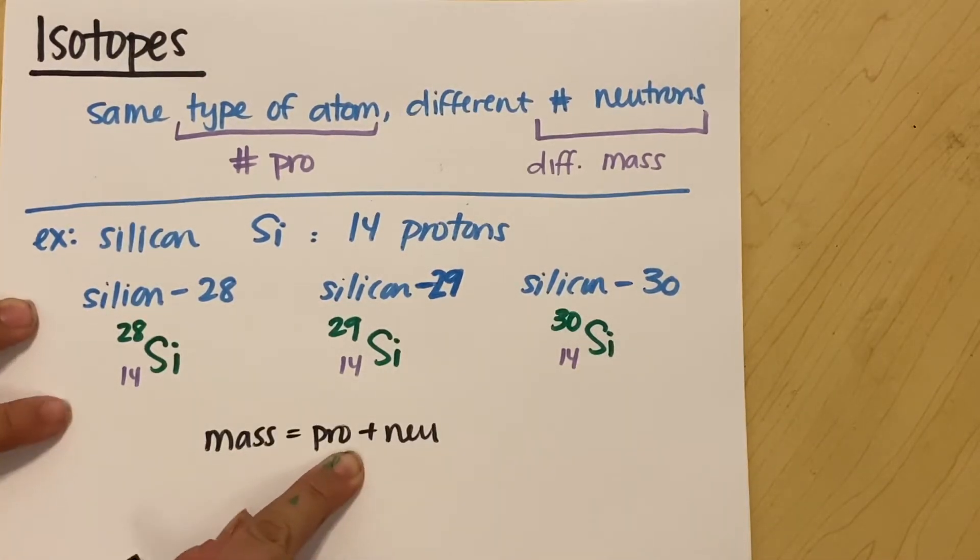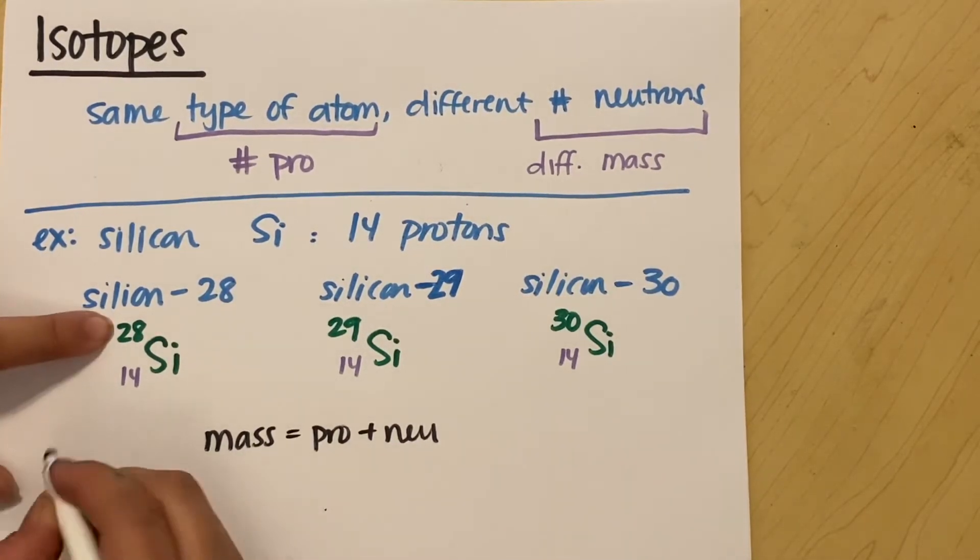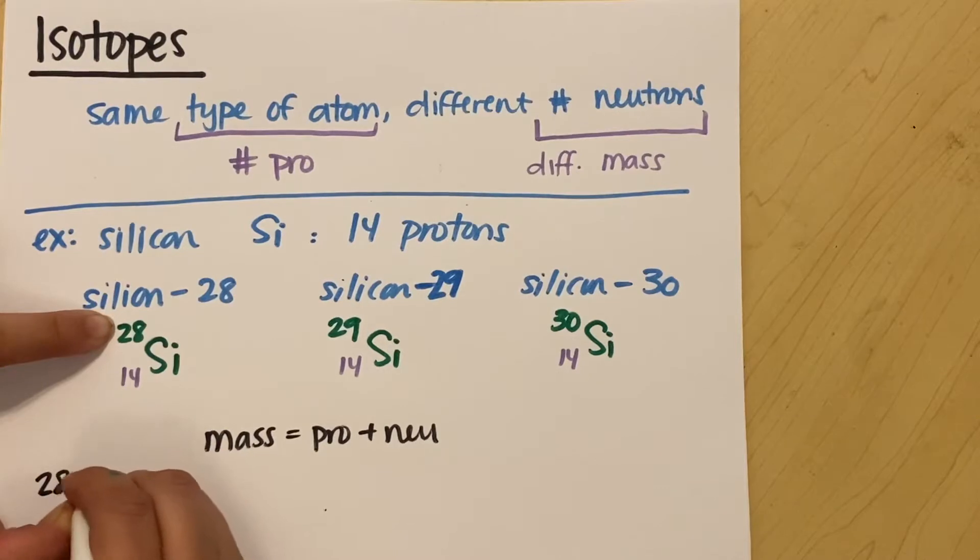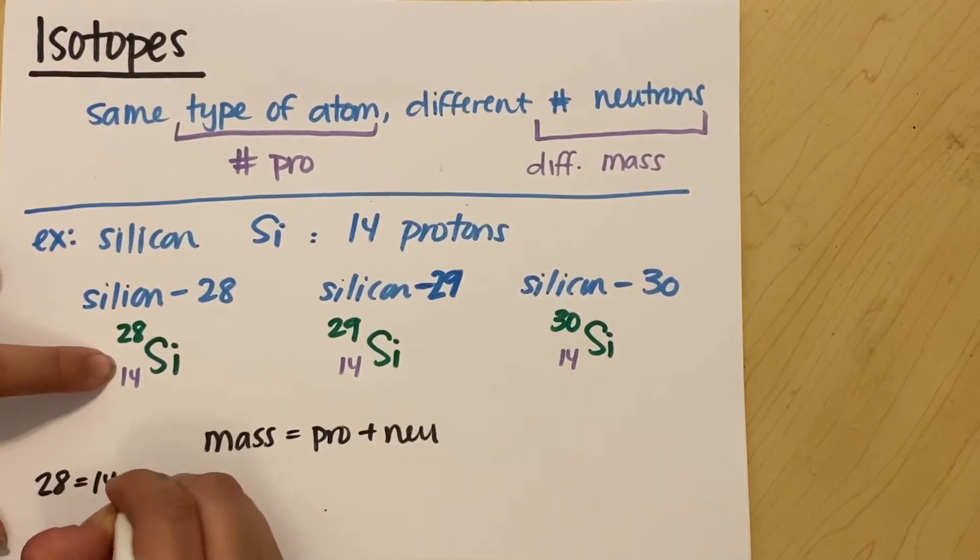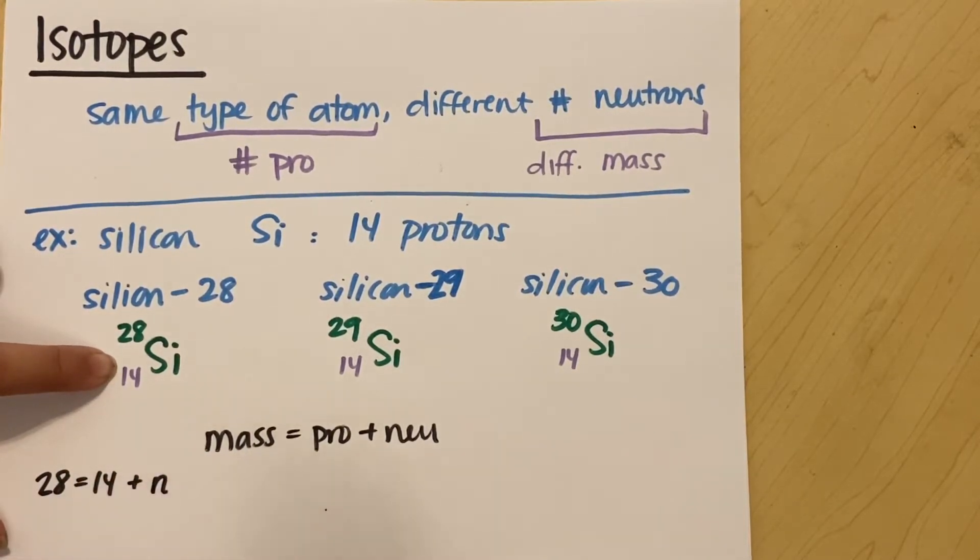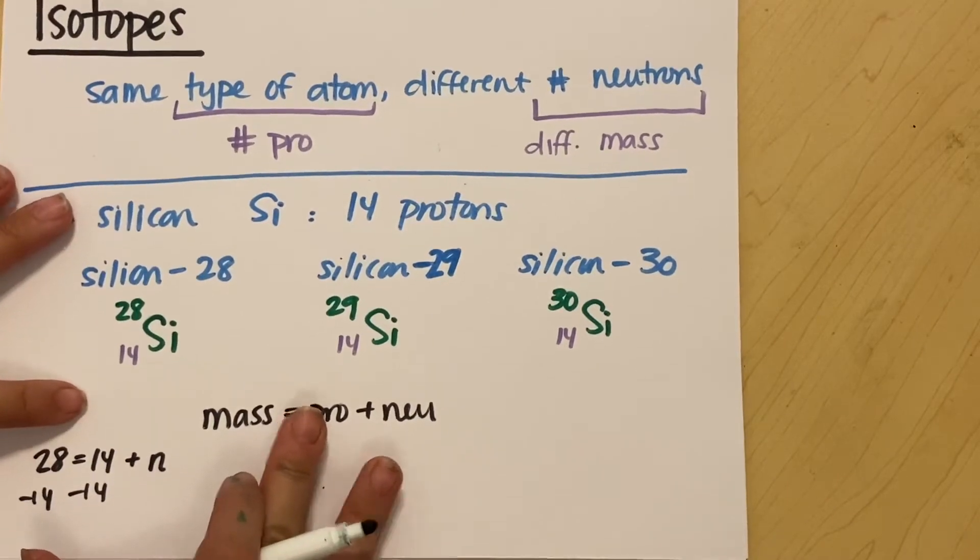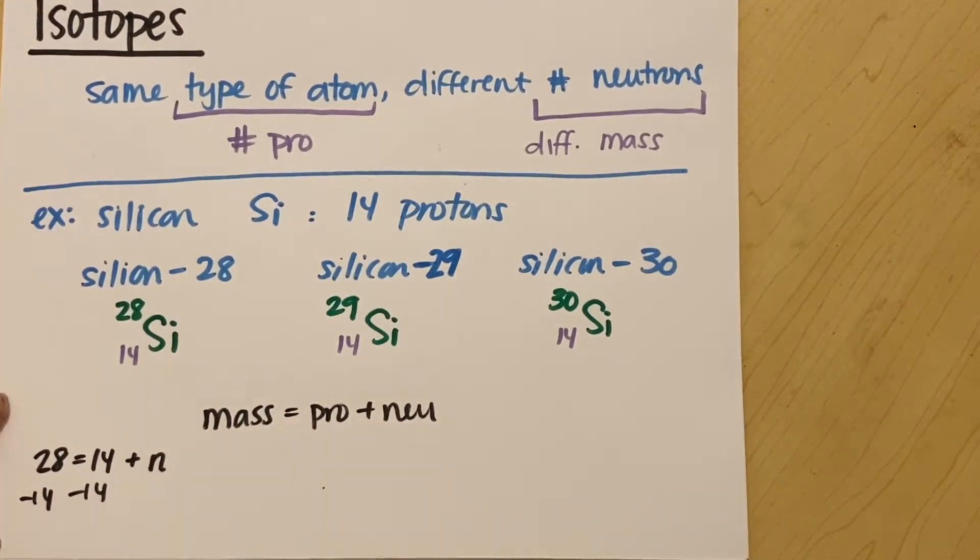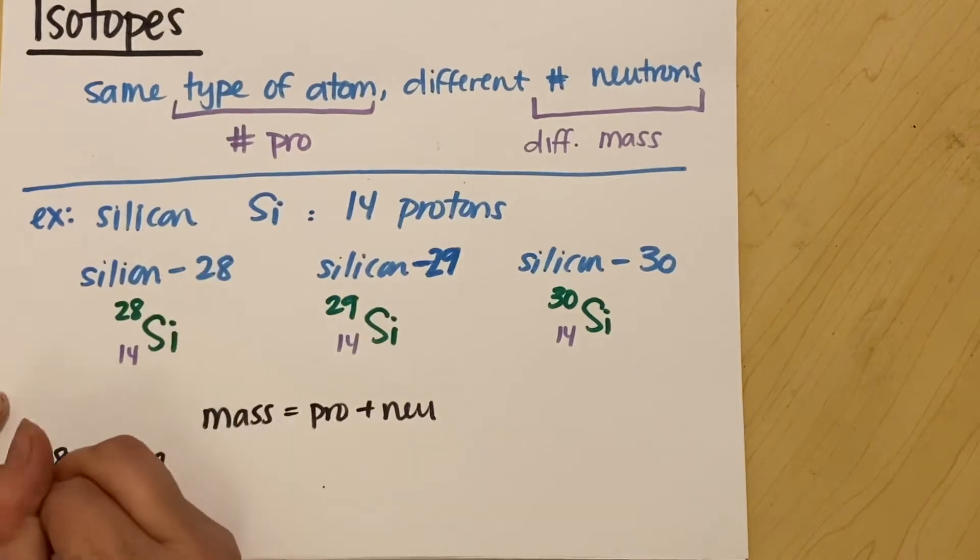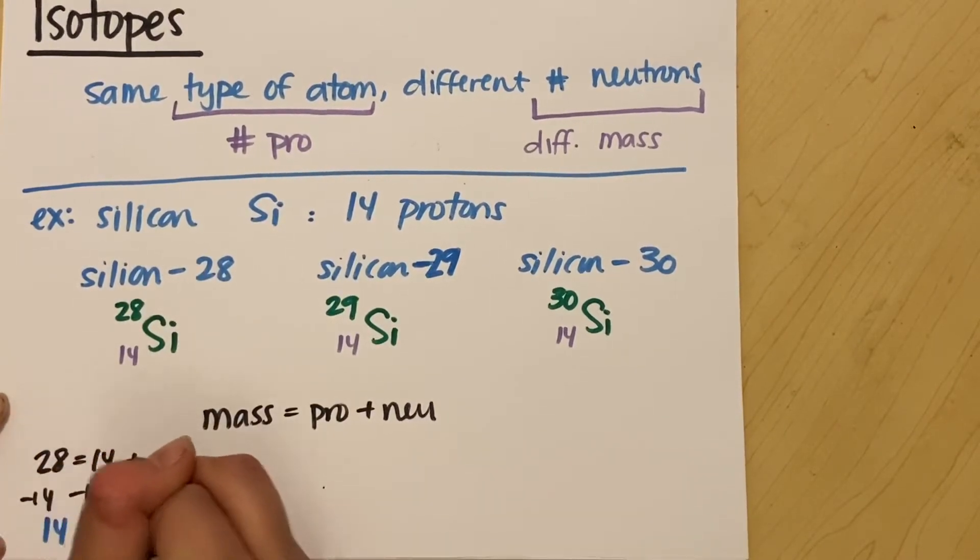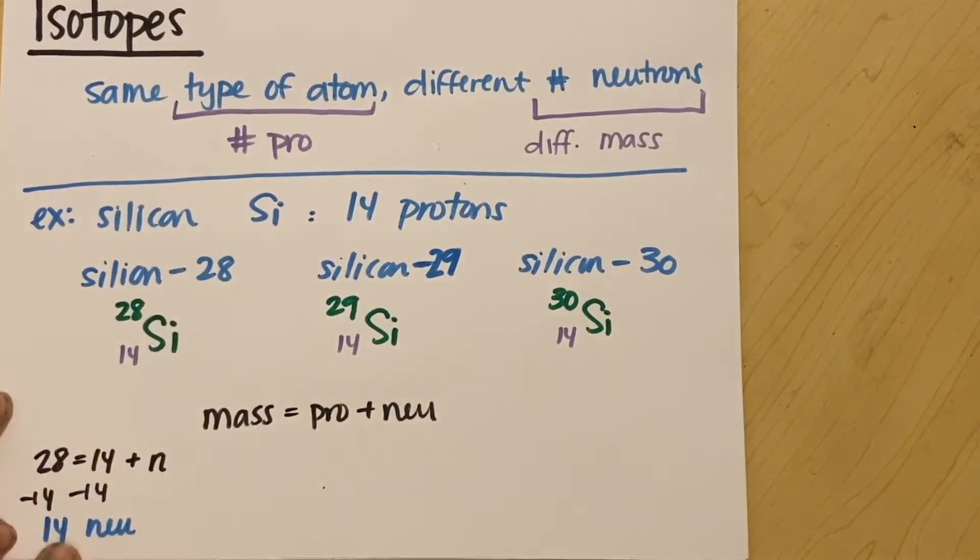Mass is equal to protons plus neutrons. So I know right here for this example, example number one, I'm going to have 28 of my mass is equal to 14 protons plus my number of neutrons, right? So minus 14. And I should get, in this case, 14 neutrons for silicon-28.